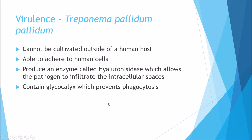In terms of virulence, it cannot be cultivated outside of a human host because it does not survive. DNA testing has found that it produces proteins which allow it to adhere to human cells. It is also able to produce an enzyme called hyaluronidase, which allows it to infiltrate intracellular spaces, making conventional drug use difficult. Furthermore, it contains a glycocalyx which prevents phagocytosis — our macrophages and B lymphocytes cannot physically carry out phagocytosis on it.